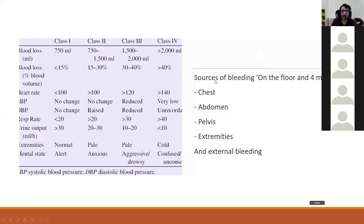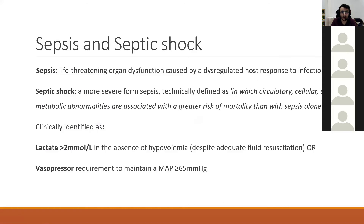For sources of bleeding, I think of 'on the floor and four more': external bleeding on the floor, and four internal sources — chest, abdomen, pelvis, and extremities. So: hypovolemic, haemorrhagic, cardiogenic, and obstructive are all non-distributive shock types. Now I'll move on to septic and distributive shock.